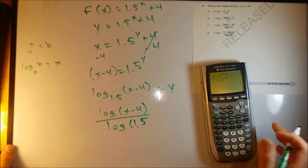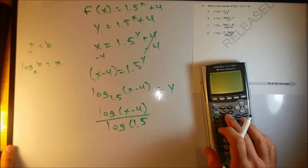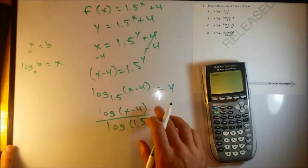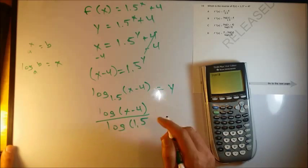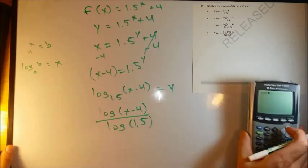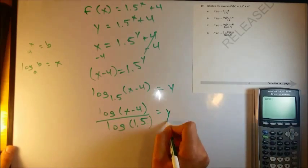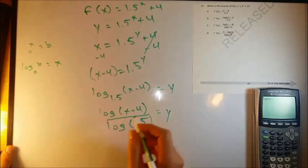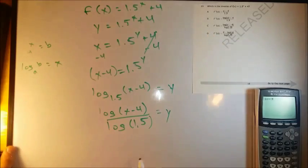Remember in your calculator, when you plug in logs, when you press log, there's nowhere to type in the base. So instead of writing this, we can write it like this. These mean the same thing. So this is equal to y. And then this answer choice looks like C. So we get C as our answer choice.